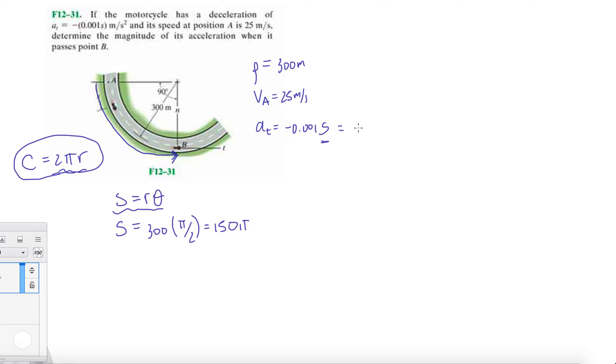This gives me 150 pi. If I want to calculate the tangential acceleration at point B, we're going to plug it in here because they give me the equation with respect to position. When I plug this into my calculator you should get minus 0.47 meters per second squared.